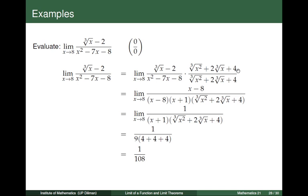How do we obtain this? We view x minus 8 as a difference of two cubes: x is the cube of the cube root of x, and 8 is the cube of 2. So we can factor x minus 8 as cube root of x minus 2 times cube root of x squared plus 2 times cube root of x plus 4. Since we multiply the numerator by this expression, we must also multiply the denominator by the same expression. The denominator x squared minus 7x minus 8 factors as x minus 8 times x plus 1.